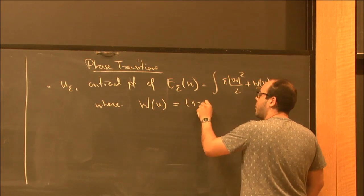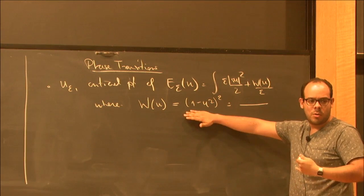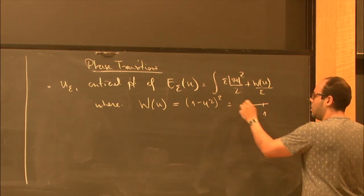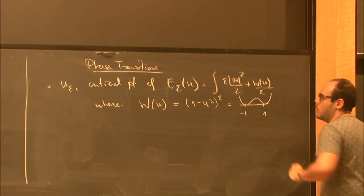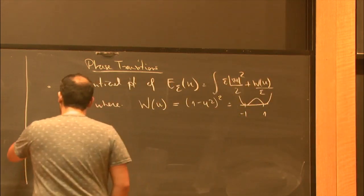And this potential is, for example, this function. The whole point here is that the function looks like a W itself. So in this case, the function is like this. It's a double-walled potential. And as such, first...